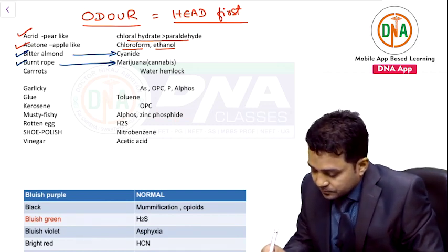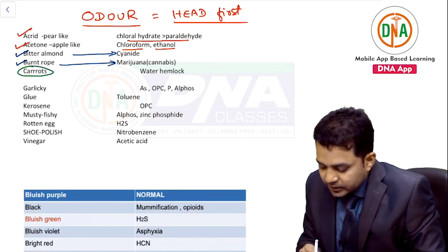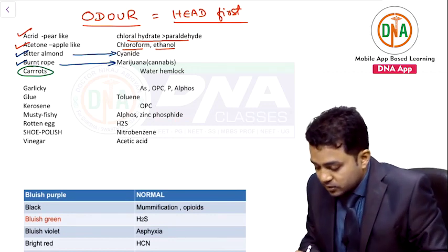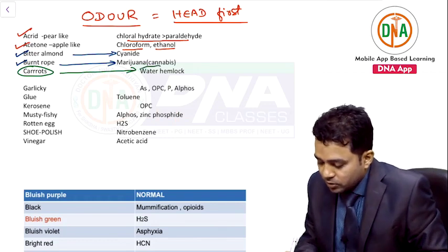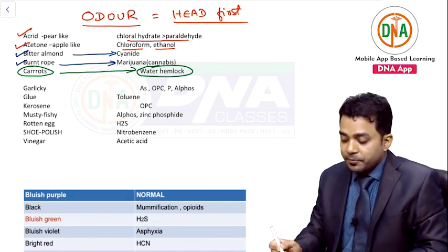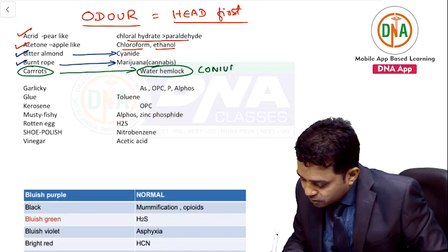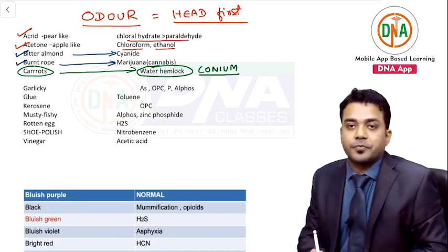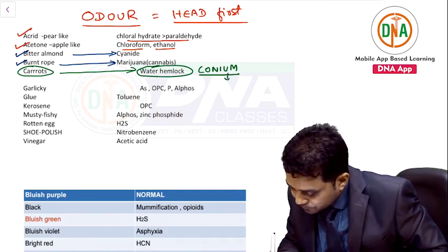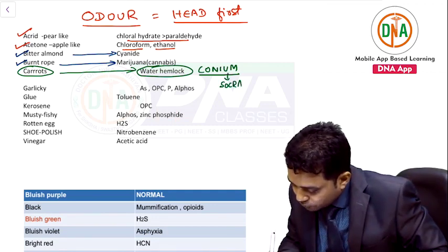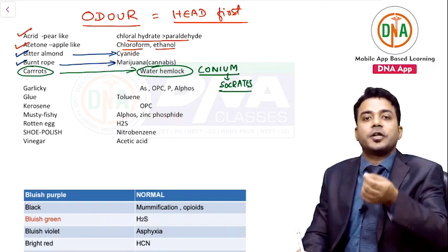Alphabet C: carrot-like smell is due to water hemlock, which is a peripheral poison called conium. Who was killed by giving conium? Socrates. This is a question from DNB exams. Who was killed by giving arsenic? Napoleon.